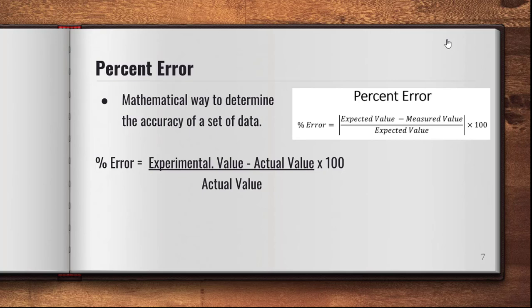To calculate percent error: take the experimental value — what you get in an experiment — subtract the actual value, which is what you should get, divide by the actual value, and multiply by 100. You may notice this is always a positive value. The formula uses absolute value signs, indicating that percent error is always positive.